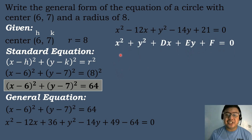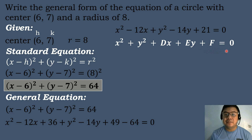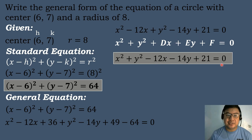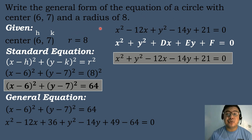We arrange the equation according to the general form x squared plus y squared plus dx plus ey plus f equals 0. The equation is x squared plus y squared minus 12x minus 14y plus 21 equals 0. Therefore, the general form of the equation of a circle with center (6, 7) and a radius of 8 is x squared plus y squared minus 12x minus 14y plus 21 equals 0.